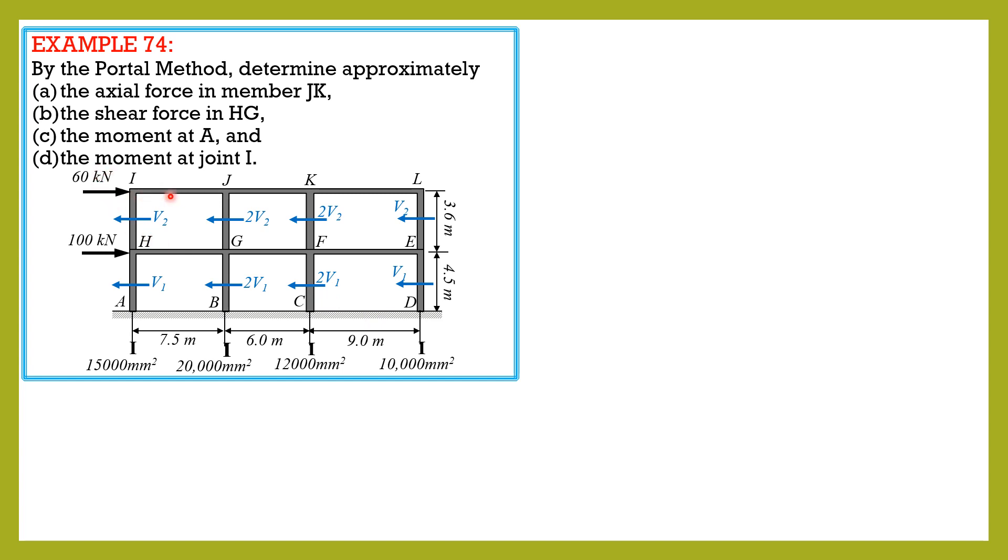So for the upper part, summation of forces horizontal equals 0. So 60 equals 6V2, so V2 is equal to 10 kilonewtons. Then for the lower part, 60 plus 100 equals 6V1.